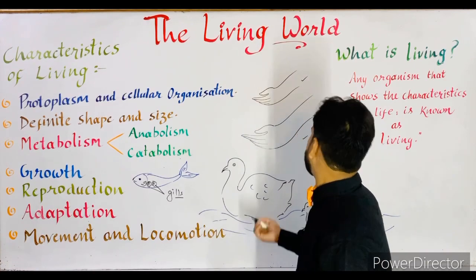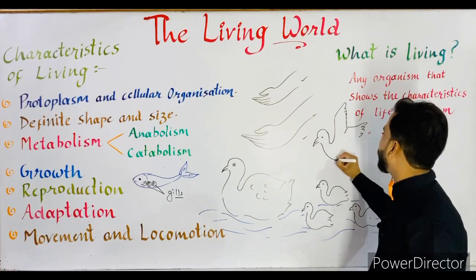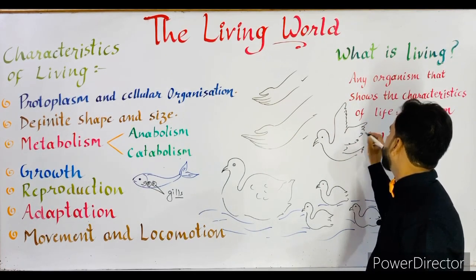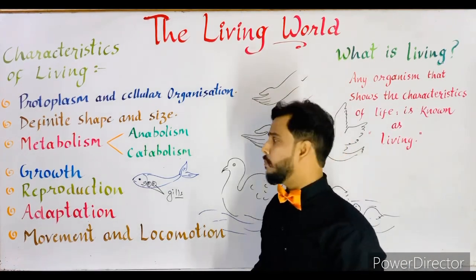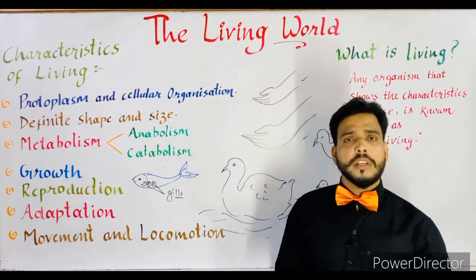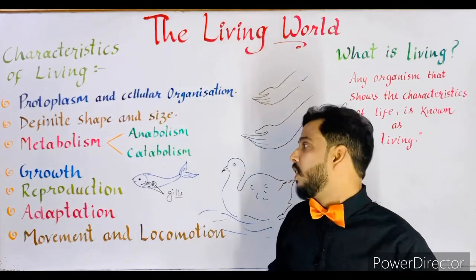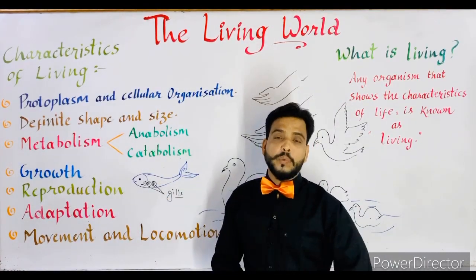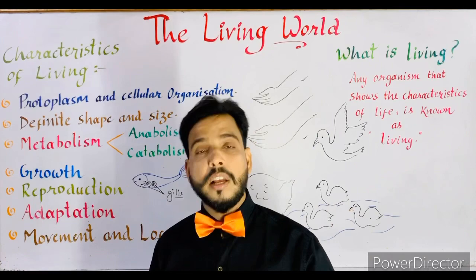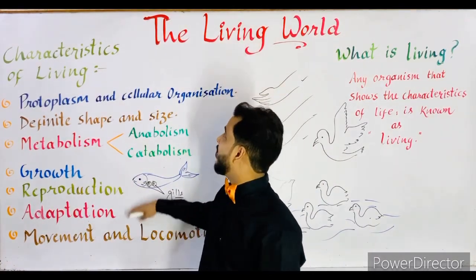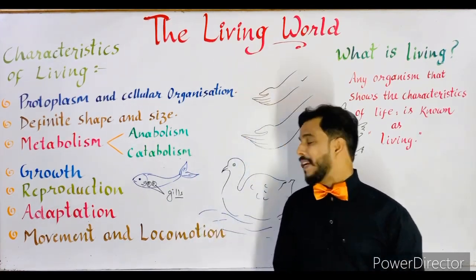Another example: a bird consists of wings for flying — without wings it cannot fly, so the presence of wings is the adaptation of the bird. Any organism has different kinds of structures through which adaptation takes place. Adaptation is the capability of an organism through which it survives in its environment; without these structures it cannot survive. So adaptation is very important for survival, and it is a characteristic found only in living beings.